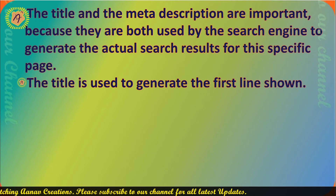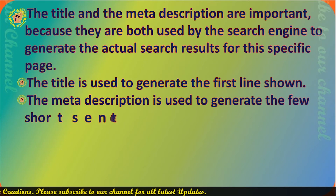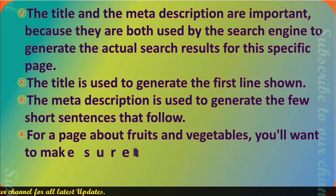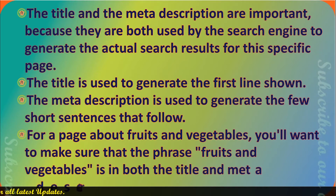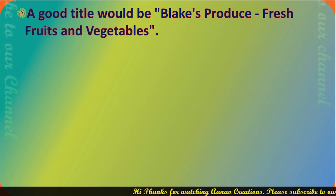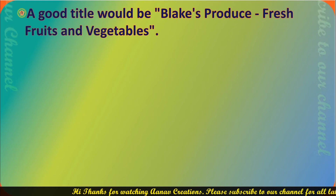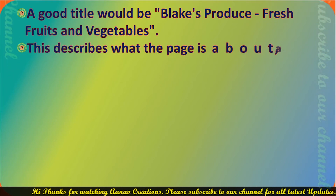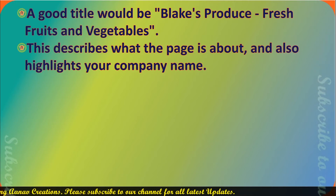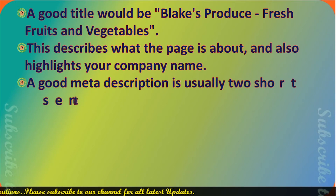The title is used to generate the first line shown in search results. The meta description is used to generate the few short sentences that follow. For a page about fruits and vegetables, you will want to make sure that the phrase 'fruits and vegetables' is in both the title and the meta description. A good title would be: 'Blake's Produce — Fresh Fruit and Vegetables.' This describes what the page is about and also highlights your company name.